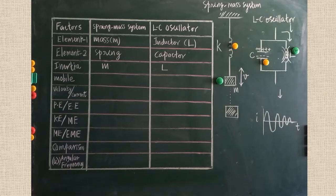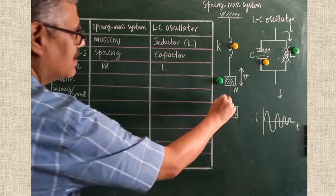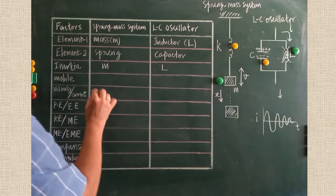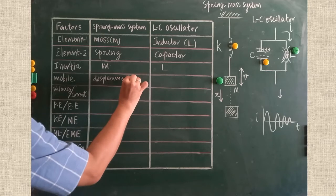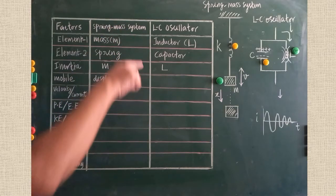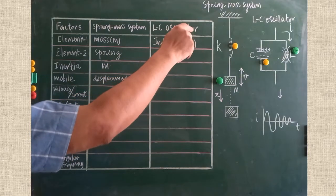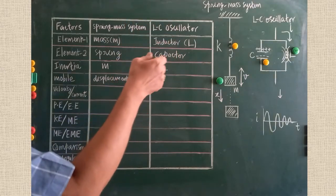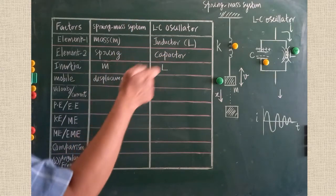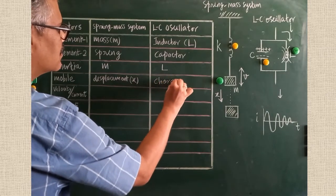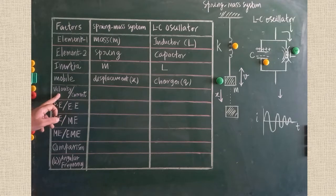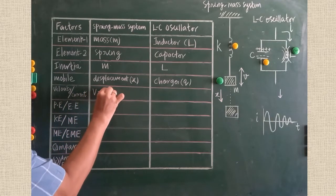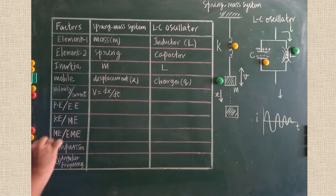Now consider the mobile things — which one moves. In the spring-mass system, when the mass is pulled it moves a certain distance — that is called displacement, denoted X. In the LC circuit, once charges are discharged, current starts moving; it is the charges that move. Therefore, charge q can be compared with displacement X. From displacement we calculate velocity as V = dx/dt.